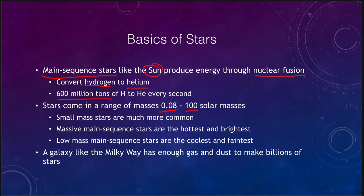Sometimes we see things going a little higher than that, but when we find stars we think might be 200 times the mass of the sun, it usually turns out to be several stars close together. Of these, the small low-mass stars are much more common — we see far more tenth-solar-mass stars than hundred-solar-mass stars.